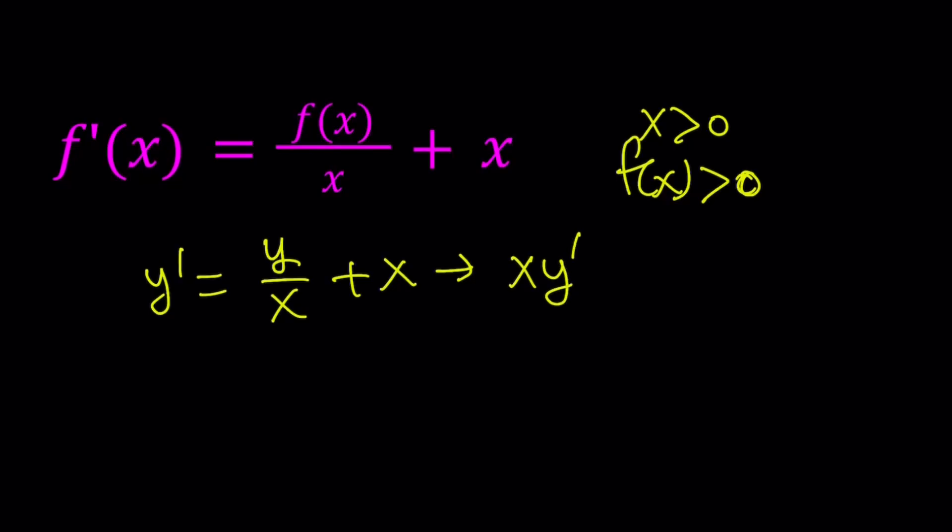That gives us x y prime equals y plus x squared. Awesome. So again, that doesn't look like a better alternative, but we're going to turn this into something nicer. So first of all, let's go ahead and put everything that contains a y or its derivatives on one side. So subtract y and leave the x squared alone.